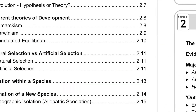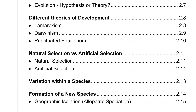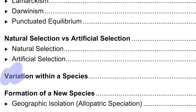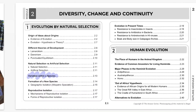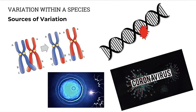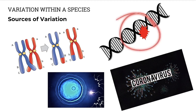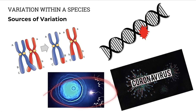Then we'll have a look at variation within a species — the sources of variation and types of variation. You covered this earlier in the year. For example, crossing over in meiosis introduces variation. Mutations in DNA introduce variation. Random fertilization — which sperm gets to which egg — introduces variation.